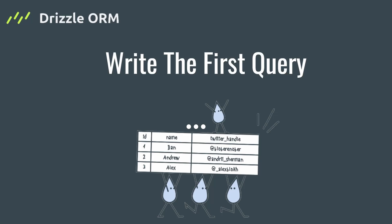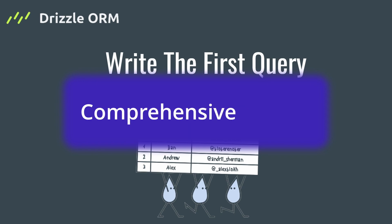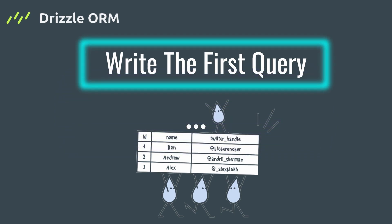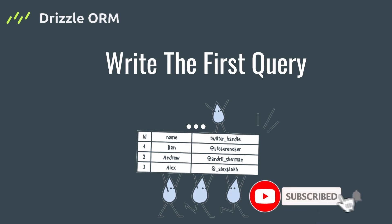Hey, what's going on developers — this is Sakura Dev Channel, and welcome back to the third episode of the Drizzle ORM comprehensive course. In this video we're going to write our first query with Drizzle ORM. In the previous video I promised we would talk about relationships between tables, but I figured it would be better to cover queries first and then move to the relationships section.